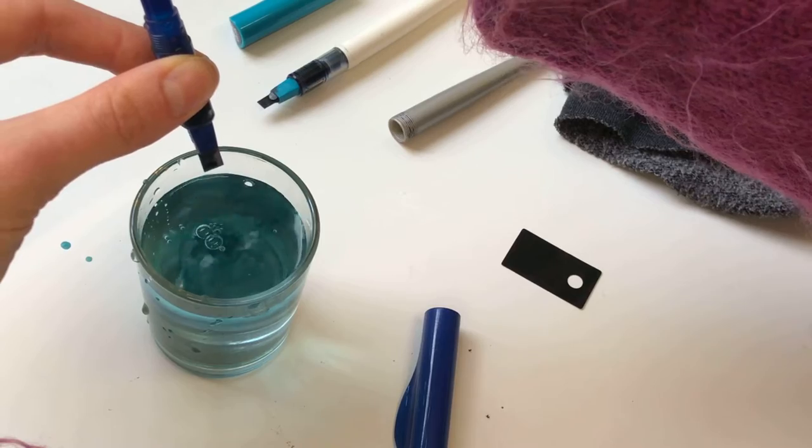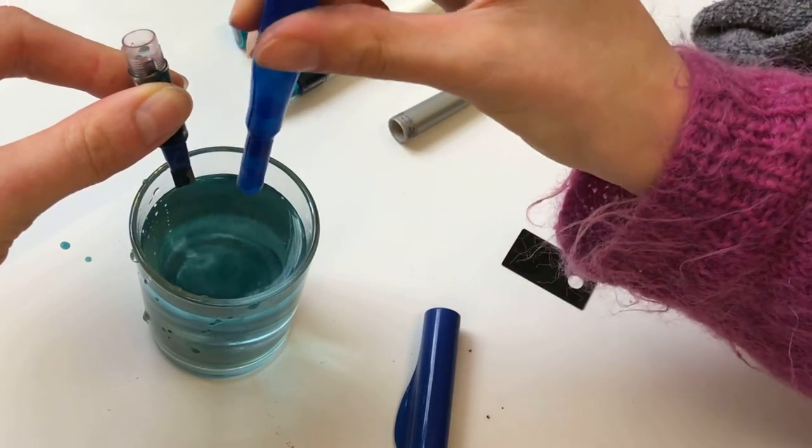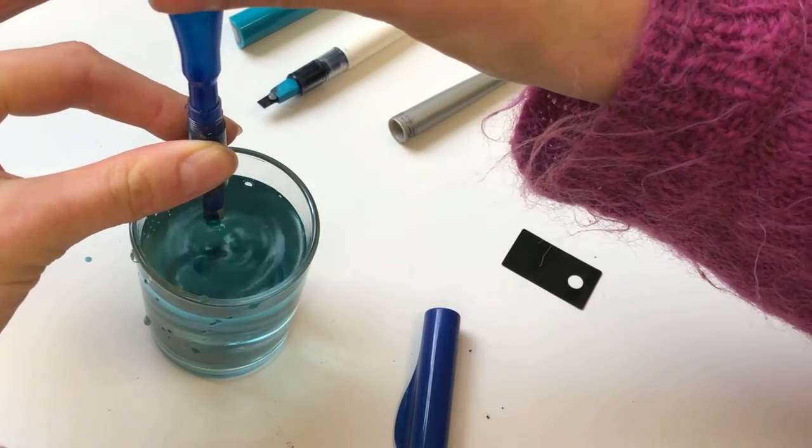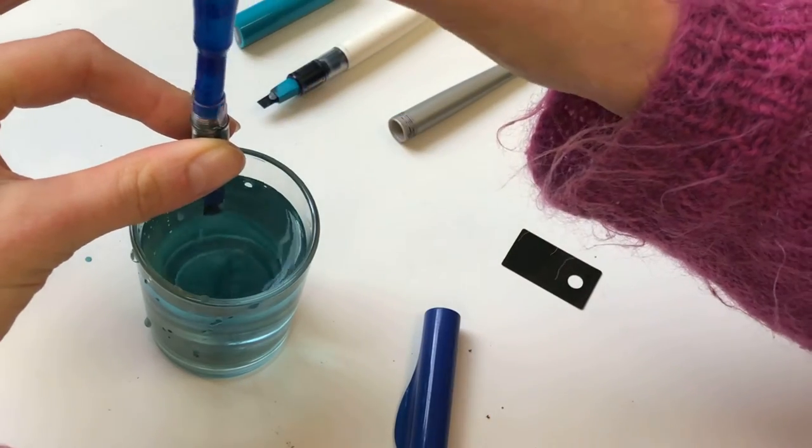So can you see that? I just pick up some water in the pipette and then squeeze it through the nib, just squeezes that extra bit of excess ink.